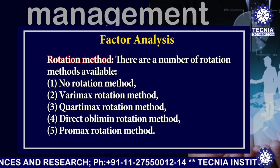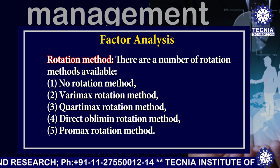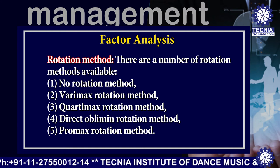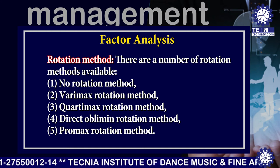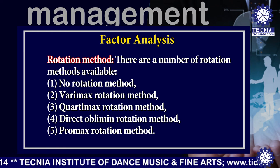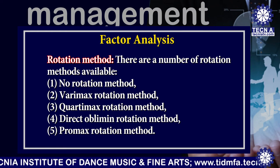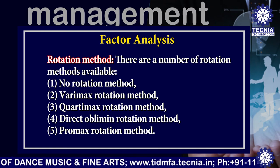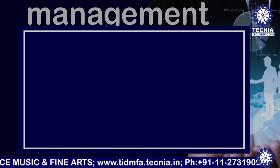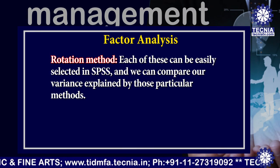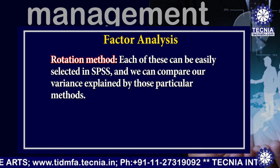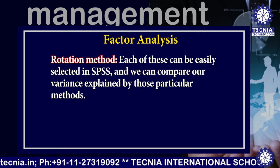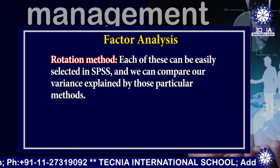There are a number of rotation methods available: the first is no rotation, the second is varimax rotation, the third is quartimax rotation, the fourth is direct oblimin rotation, and the fifth is promax rotation. Each of these can be easily selected in SPSS and we can compare our variance explained by those particular methods.